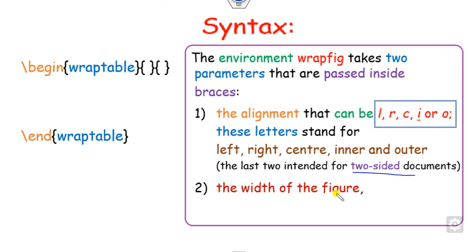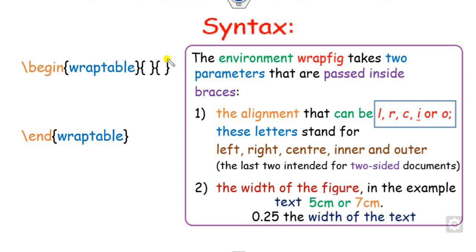The second parameter specifies the width of the table or figure. If you want to place the table as 5 cm, 7 cm, or 9 cm wide, you can write those values here — for example, 5 cm, 7 cm, or 0.25 times the text width.